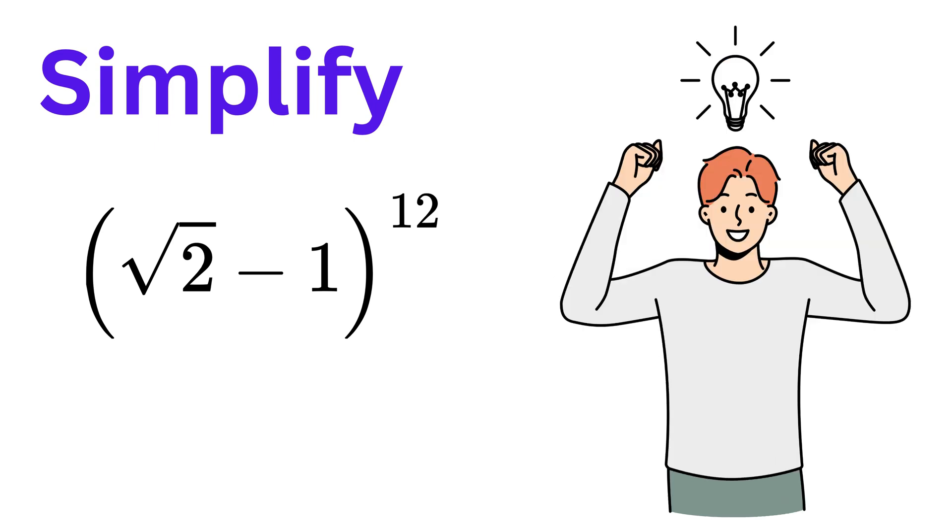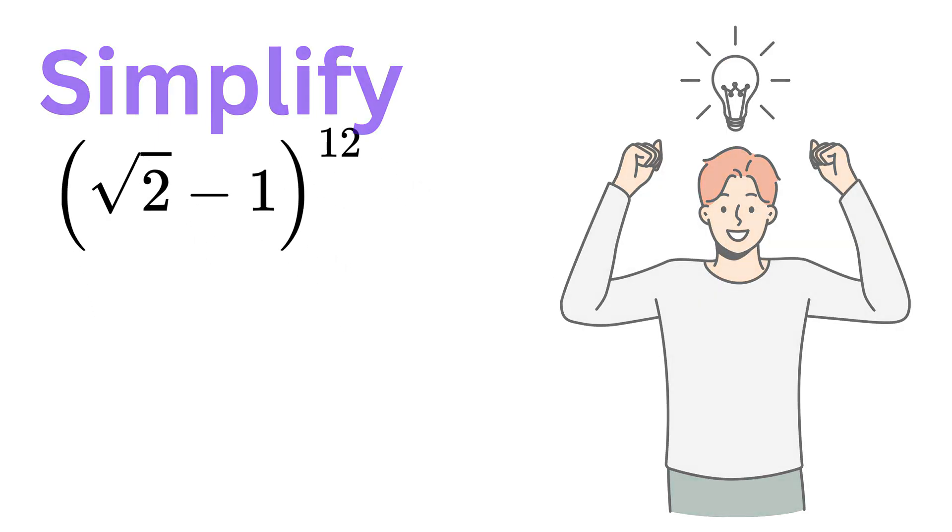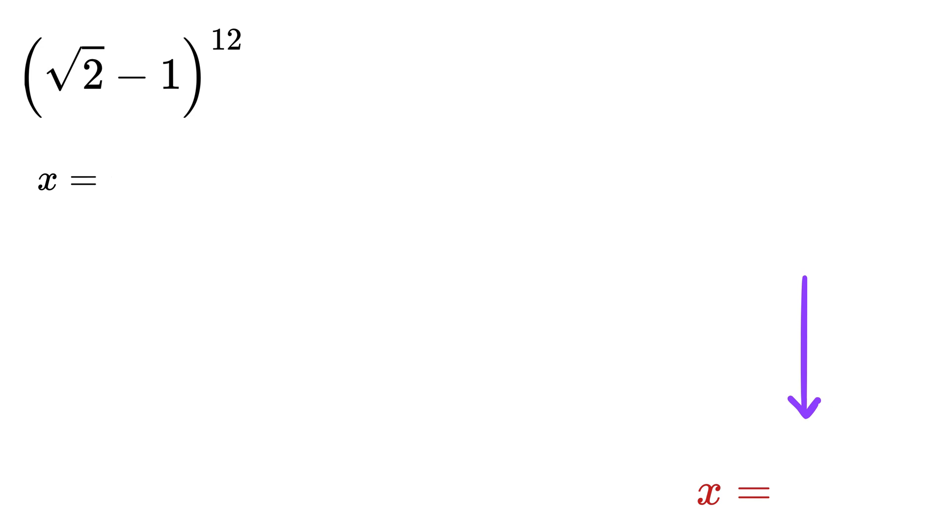Instead, let me show you a much smarter way. Let's say we have a variable x = √2 - 1, so now our job is to find the value of x^12.